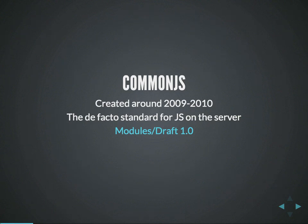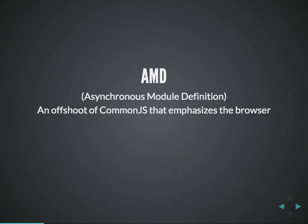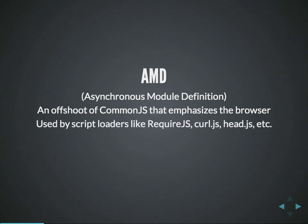There are some problems with CommonJS: it works really well on the server because all the files are local to one another, whereas in the browser the files are not on the local file system — you have to make asynchronous requests to go get those files. As a result, as an offshoot of CommonJS, you have AMD which stands for Asynchronous Module Definition. AMD takes a lot of what's already in CommonJS and adds functionality to support asynchronous file loading workflows common in the browser. Script loaders like require.js and curl.js implement AMD, and require.js is probably the best known AMD script loader.